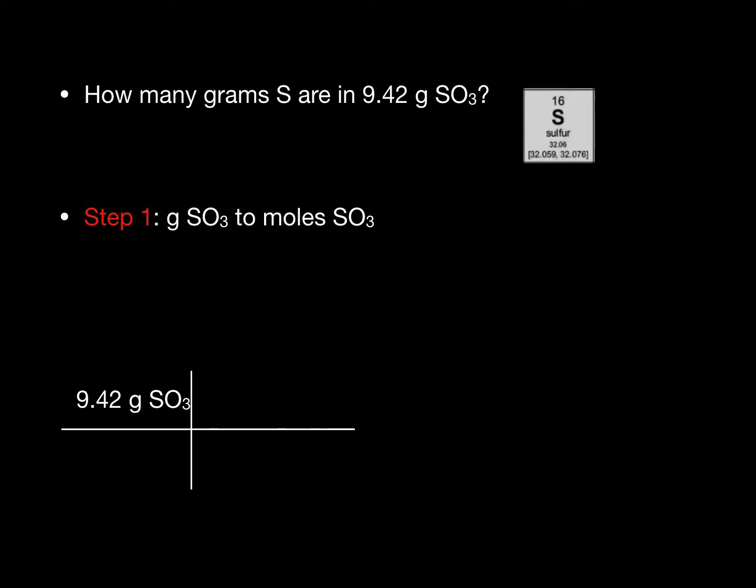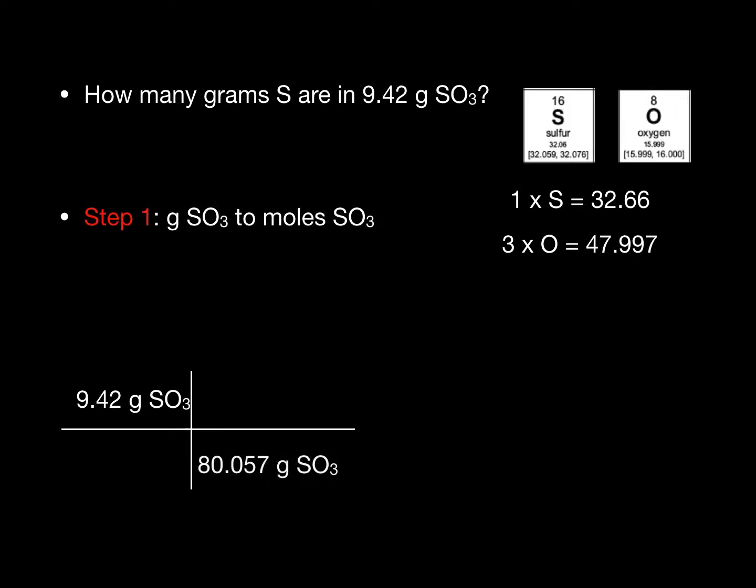Here are the snippets of the official IUPAC periodic table for sulfur and oxygen. One sulfur comes in at 32.66 grams per mole and three oxygens comes in at 47.997 grams per mole. When we sum these up, we get the molar mass of sulfur trioxide and we can now write grams down in the denominator and place moles up in the numerator. Here you can see how the units nicely cancel out.